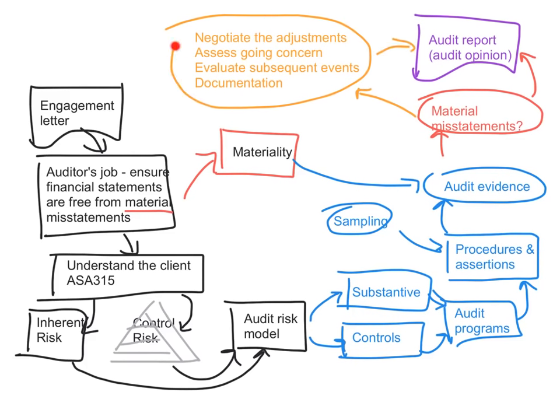In terms of what students find most difficult, evaluating subsequent events and coming up with the correct audit opinion are the tricky ones. Going concern is pretty manageable with the tools in ASA 570. Subsequent events and audit opinions require a really thorough understanding of how the auditing standard is written. For every single one of your homework answers, make sure you've got a reference to a relevant paragraph within the standard supporting your choices.